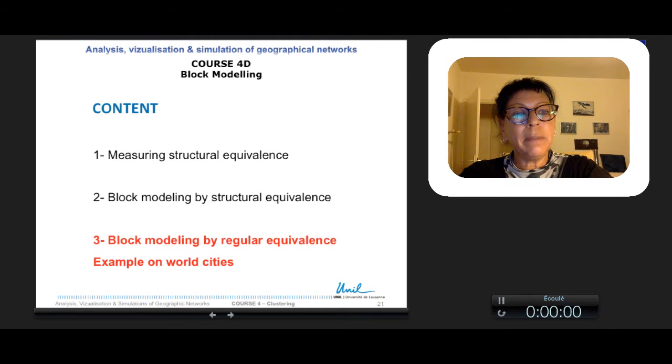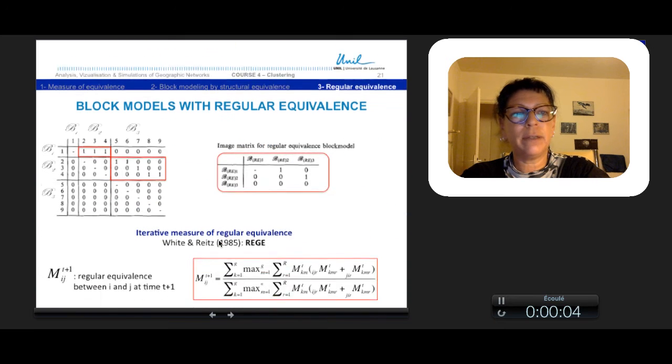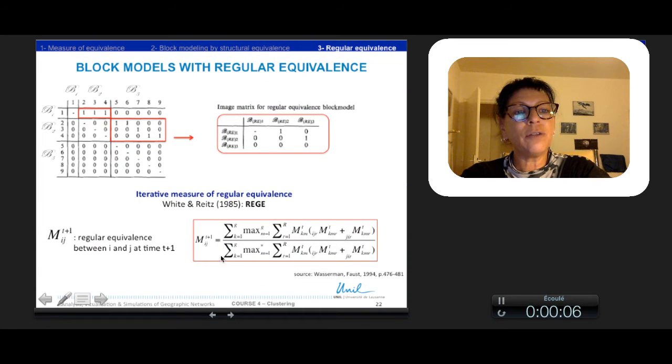Block modeling can be developed with regular equivalence rather than structural equivalence. As shown in the example, it is sufficient that each member of a block has at least a link to a node of the other block to assign one between the two blocks.